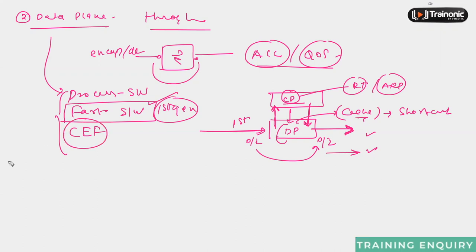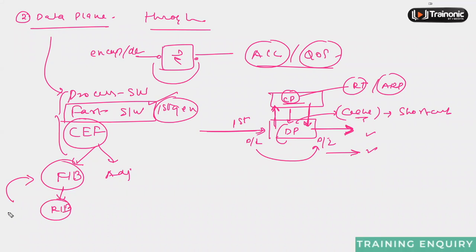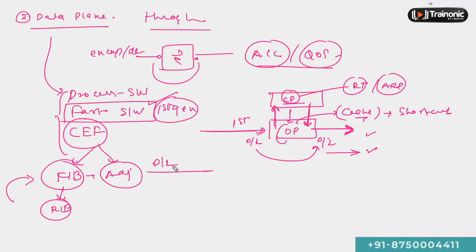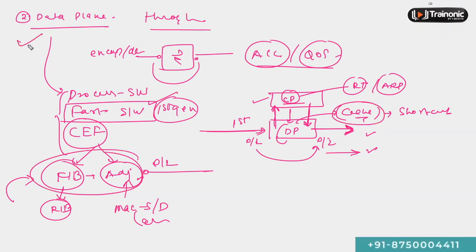Later, CEF — Cisco Express Forwarding — was introduced. CEF maintains two tables in the data plane: one called the Forwarding Information Base (FIB) and one called the adjacency table. When a packet arrives, it looks up the FIB table, which is an exact replica of the routing table. The appropriate exit interface is selected, and encapsulation details — source MAC, destination MAC, EtherType — are maintained in the adjacency table. Even for the first packet, it does not go to the CPU, since both tables are maintained in the data plane.